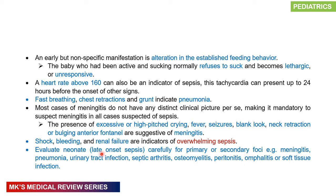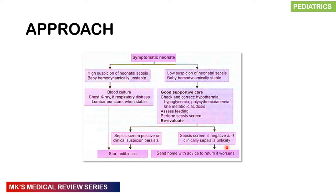Your investigations should evaluate the primary or secondary focus — meningitis, pneumonia, UTI, septic arthritis, osteomyelitis, peritonitis, omphalitis, or other soft tissue infections. For the general approach: if there is high suspicion of neonatal sepsis and the baby is hemodynamically unstable — in respiratory distress, hypotensive, tachycardic, or bradycardic — order rapid investigations: blood culture, chest X-ray if in respiratory distress, and perform a lumbar puncture once stabilized, then start antibiotics.